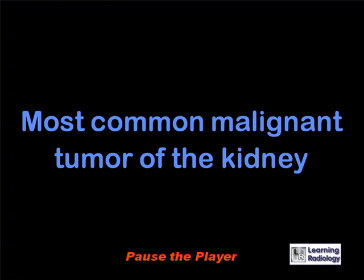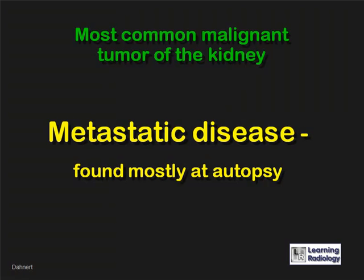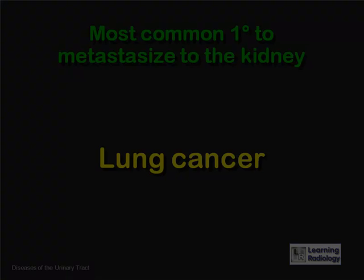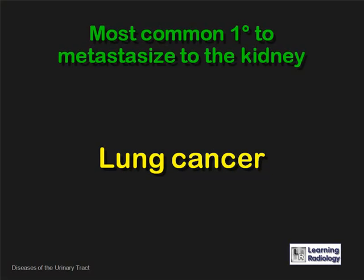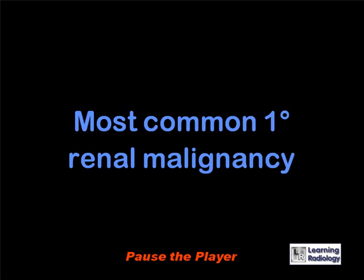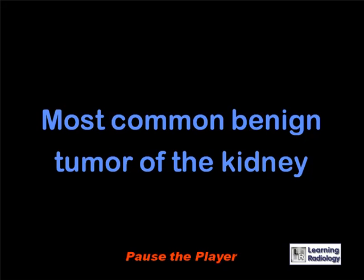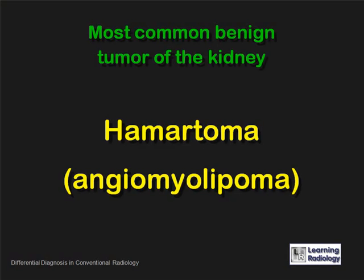What is the most common malignant tumor of the kidney? Metastatic disease, found mostly at autopsy. What is the most common primary to metastasize to the kidney? Lung cancer. What is the most common primary renal malignancy? Renal cell carcinoma. What is the most common benign tumor of the kidney? A hamartoma and angiomyolipoma.